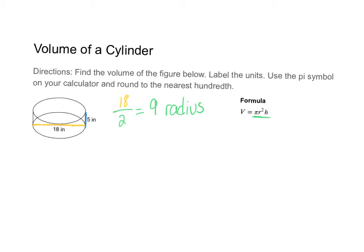So using my formula I'm going to say volume is equal to pi—remember it's just a math symbol—radius which is 9, and then the radius is squared, and then multiply by the height which is 5.